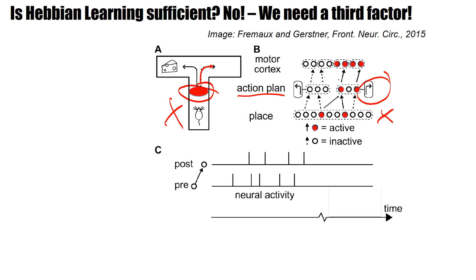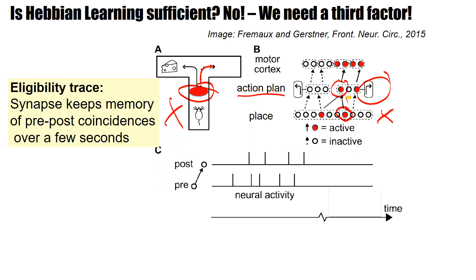In three-factor rules, the co-activation of the presynaptic neuron and the postsynaptic neuron leads to a synaptic eligibility trace. It sets a flag — it marks the synapse — but itself it's not yet a weight change. This synaptic eligibility trace keeps memory over a second or two or three, but then it decays. When moving to the right there is no success signal, so it will just decay and go away.